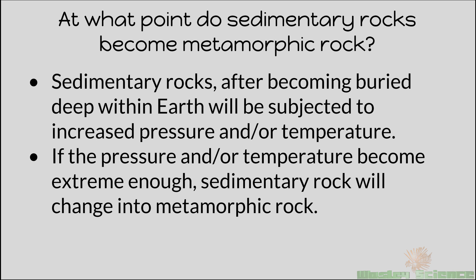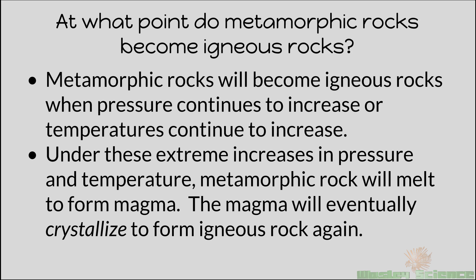Sedimentary rocks, after being buried, compacted, and pushed down into the crust, can go through increased pressure and temperature — heat and pressure. When this happens, a sedimentary rock can become a metamorphic rock. Metamorphic rocks can then become igneous when pressure and temperature continue to increase, eventually reaching the mantle and becoming magma. Under these extreme conditions, the metamorphic rock melts, becomes magma, and eventually crystallizes to become an igneous rock.